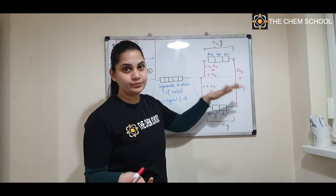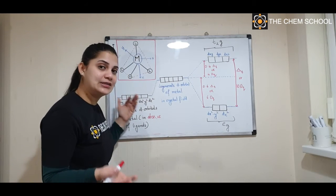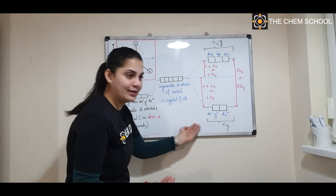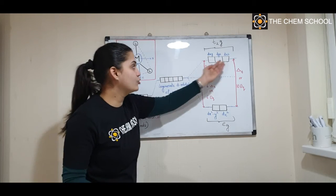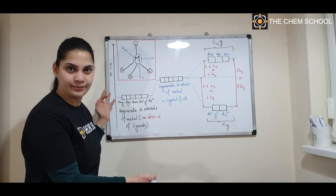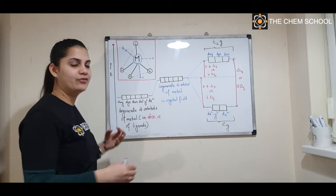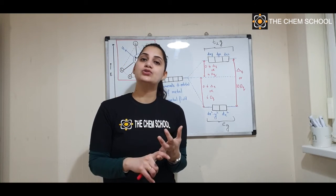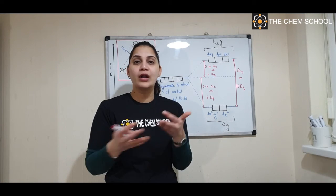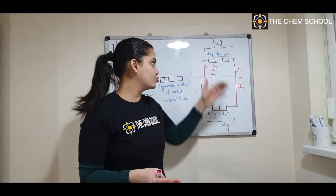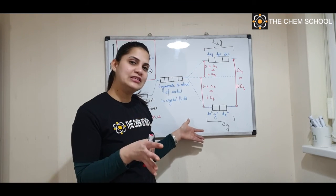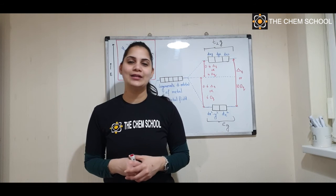In a tetrahedral complex, the reason for this splitting is that the eg orbitals experience the least repulsion while the t2g orbitals experience more repulsion, giving them higher energy. In the next class, we will see how to fill electrons in octahedral and tetrahedral orbitals based on the spectrochemical series — that is, with strong field or weak field ligands. See you soon, and thank you.